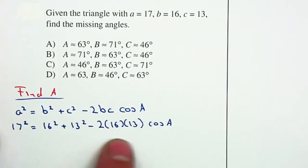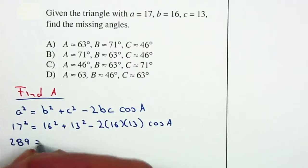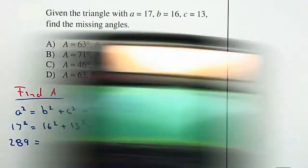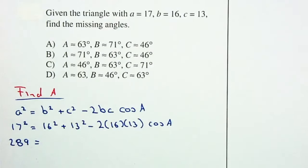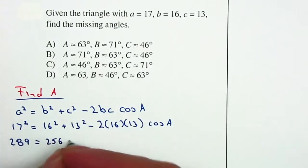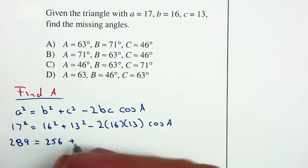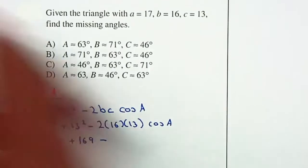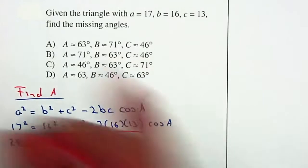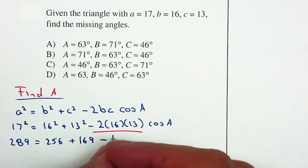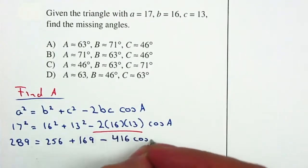I'm going to simplify. You want to make sure you simplify this carefully. 17² is 289. For 16², let me do it step by step: 16² is 256, plus 13² is 169, minus—I'm going to multiply all three numbers together—2 times 16 times 13 is 416, multiplied by the cosine of A.